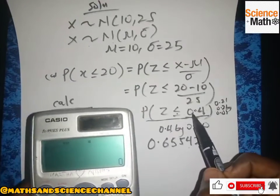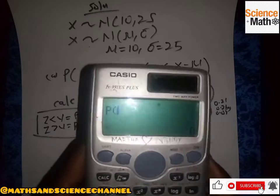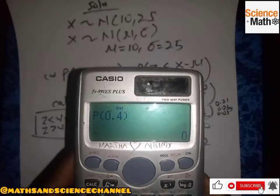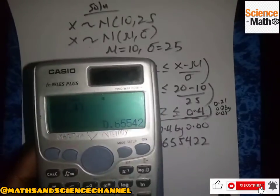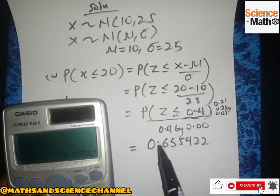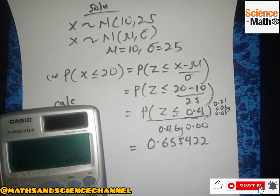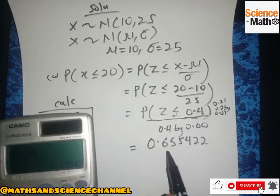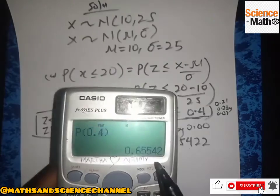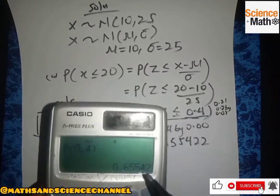Since our z is less than 0.4, we use P. Press 1 for P, enter 0.4, and press Enter. The calculator gives us the same value we found from the z-table, just slightly approximated. This is another way to verify the answer using the calculator.